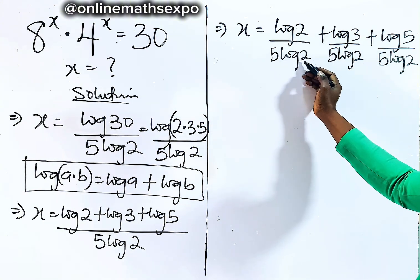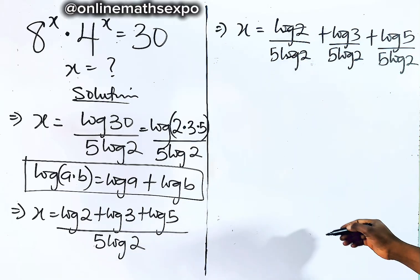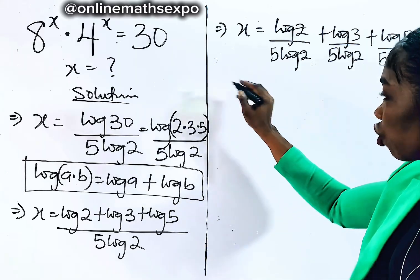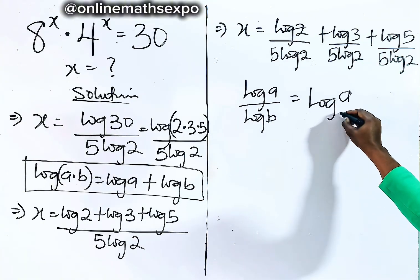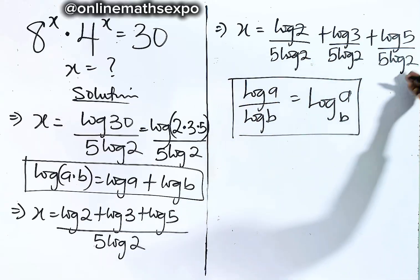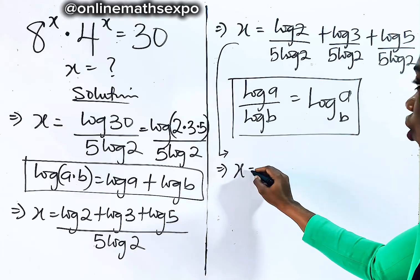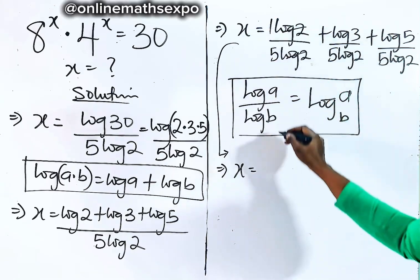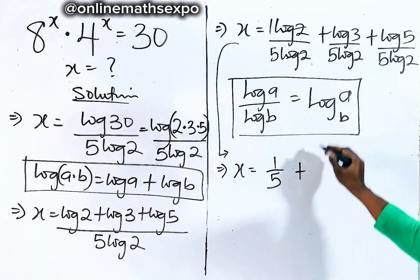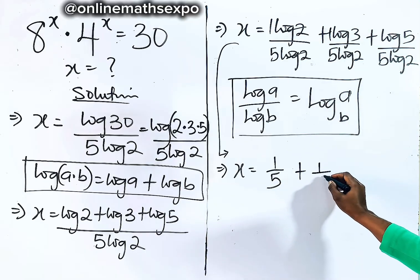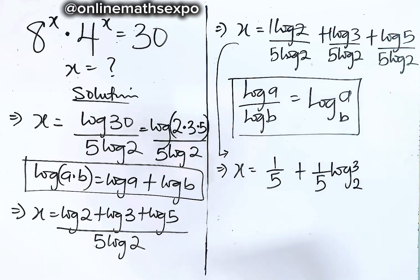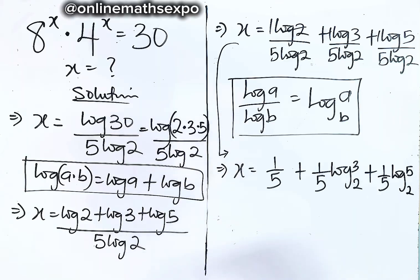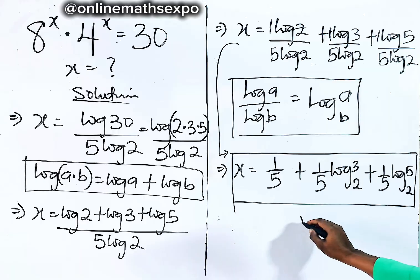Now we can simplify. In the first term, log 2 divided by log 2 cancels, leaving 1 over 5. For the remaining terms, recall the change of base rule: log A divided by log B is log of A base B. Applying this, we get x is equal to one fifth plus one fifth log 3 base 2 plus one fifth log 5 base 2. This is the simplified value of x.